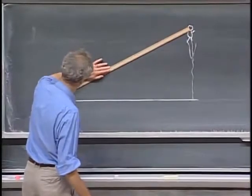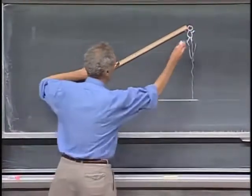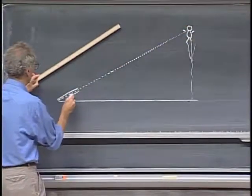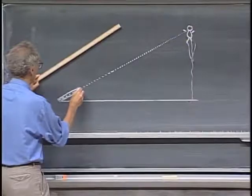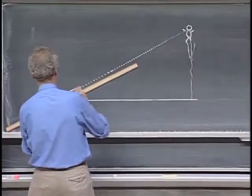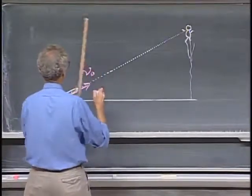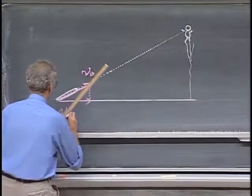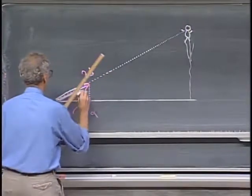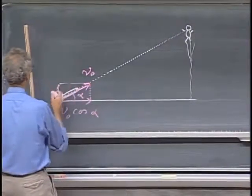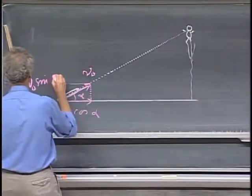He has a gun which is a golf ball gun, and he aims that gun right at the monkey. He shoots it with a certain velocity — the golf ball. Let this be the speed v₀. So the horizontal component is v₀ cosine alpha, and the vertical component equals v₀ sine alpha.